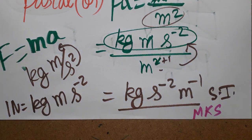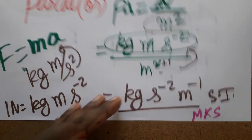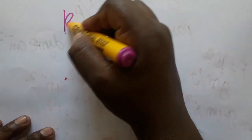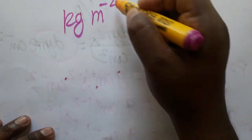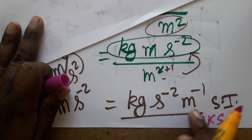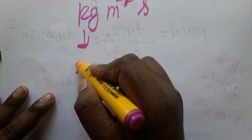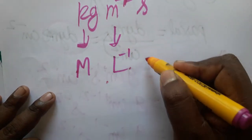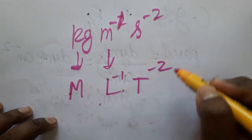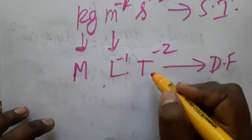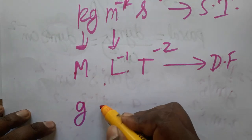Now, the dimensional formula for pressure. We know the SI unit is kg·m⁻¹·s⁻². Writing in dimensional terms — M for mass, L for length, T for time — the dimensional formula for pressure is M¹L⁻¹T⁻². This same dimensional formula applies in both the SI and CGS systems.